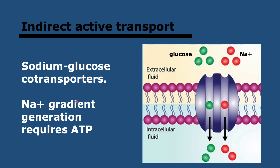Another type is indirect active transport. The example here is sodium-glucose co-transporters. They transfer a sodium ion and a glucose molecule together into a cell. The glucose molecule can move against its concentration gradient because the sodium ion is moving down its own concentration gradient, utilizing the energy released by that sodium movement. This is used, for example, in the kidney to reabsorb glucose and prevent it being lost in urine, and also in the small intestine to absorb digested glucose. However, it requires pumping sodium out in the first place to generate that gradient, so ATP is required to form the sodium gradient so that both can pass through at the same time.